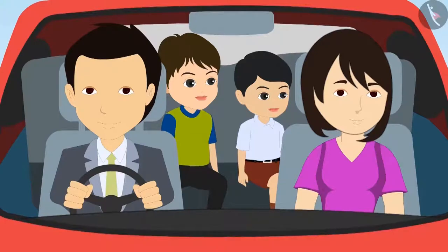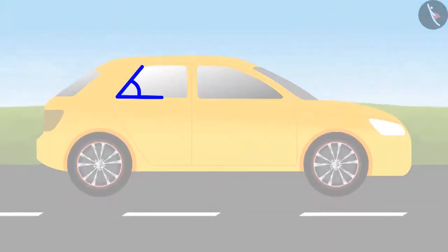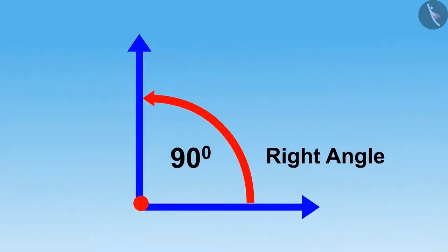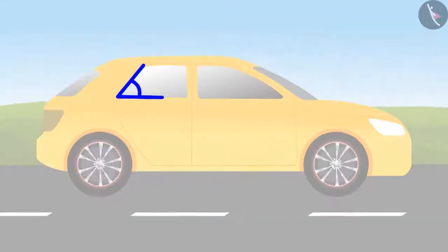"Yes Dholu, you are right. In the back window there is an angle which is smaller than a right angle." "Hey Bholu, how can you say this is smaller than a right angle?" "Because Dholu, this angle is not like L. Remember, right angles look like L." "Yes, I remember."